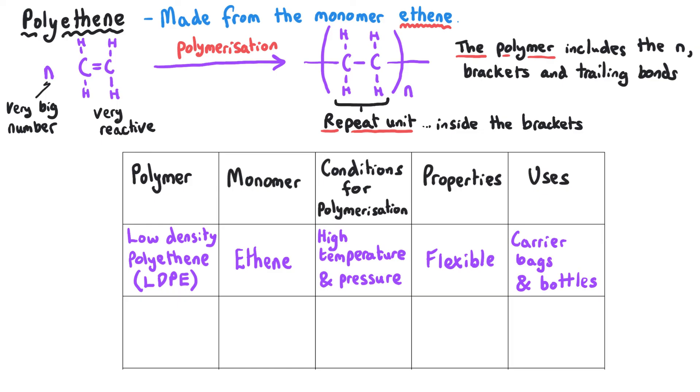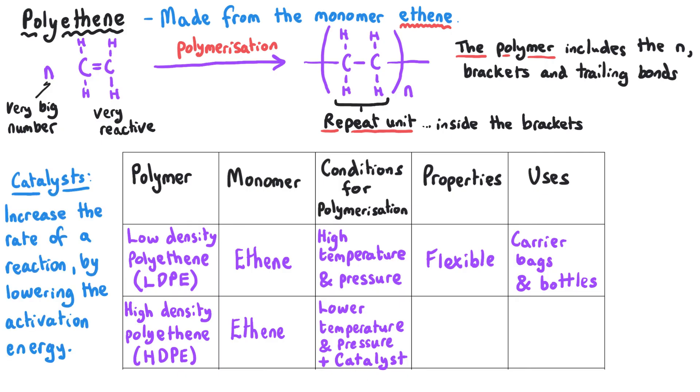And then there is also high-density polyethene, and that forms at a much much lower temperature and a lower pressure as well, and we're able to use those conditions because this process uses a catalyst. And remember, catalysts lower the activation energy required for a reaction without being used up, and that means that the reaction happens faster, and we can use a lower temperature as a result. The high-density polyethene is much more rigid and generally stronger, and so it's useful for packaging material and carrying boxes and things like that, where that rigidity is really really useful.